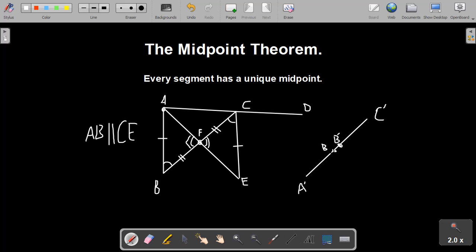So by definition, since B is the midpoint of A prime, C prime, then AB is congruent to BC. And since B prime is also the midpoint of A prime, C prime, then A prime, B prime is congruent to B prime, C prime.